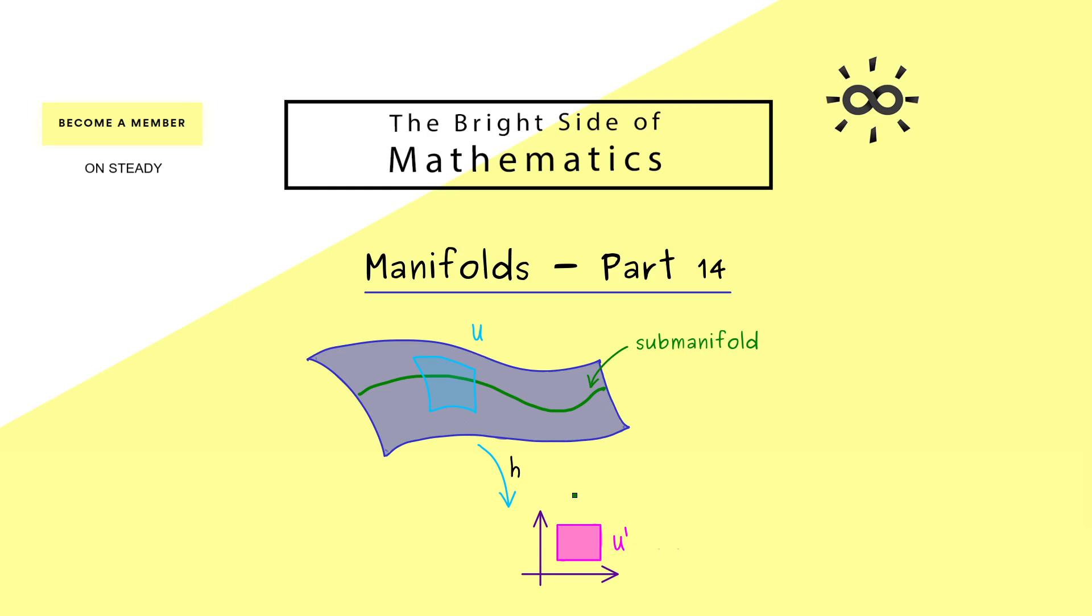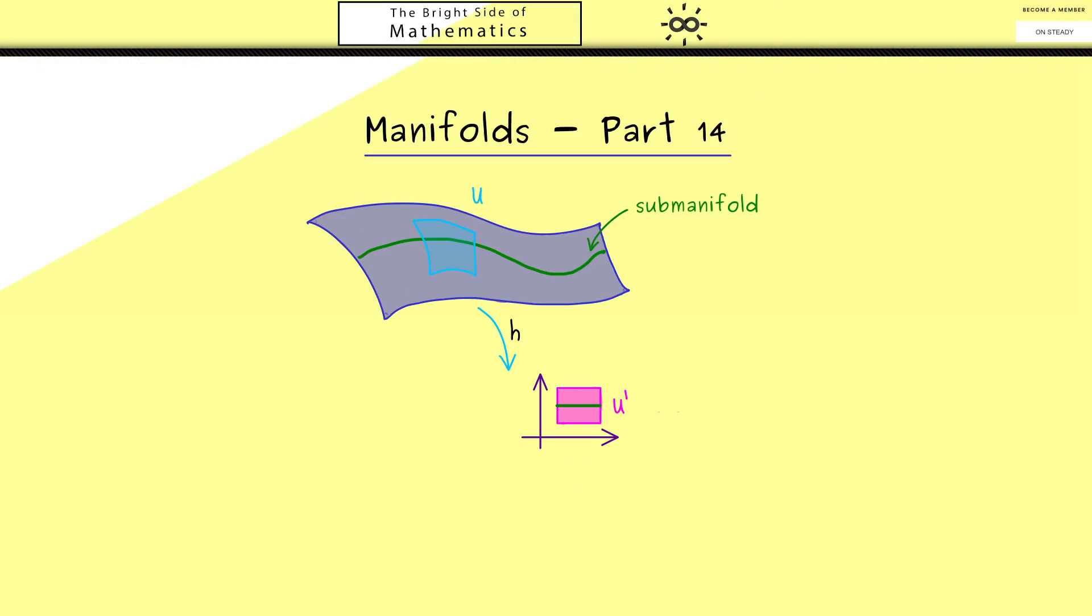Then this set should be mapped into a subspace of R^n. So we can visualize this as a straight line in u'. In other words, if we restrict the map here to the sub-manifold, we get a chart for this smaller manifold. So in this sense, everything fits together and we can go to the definition.